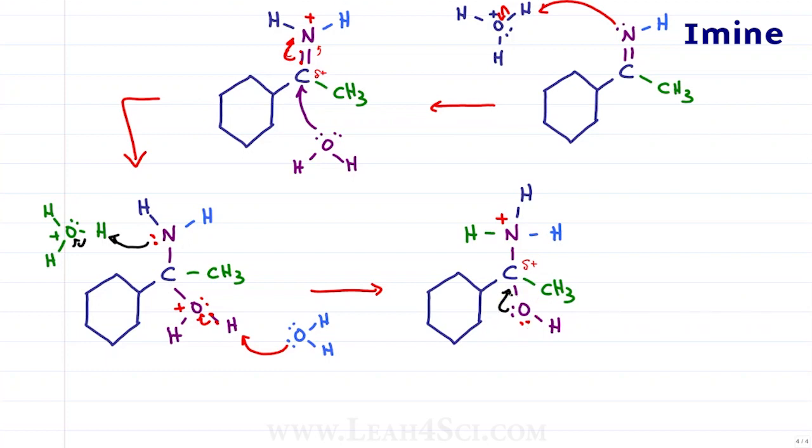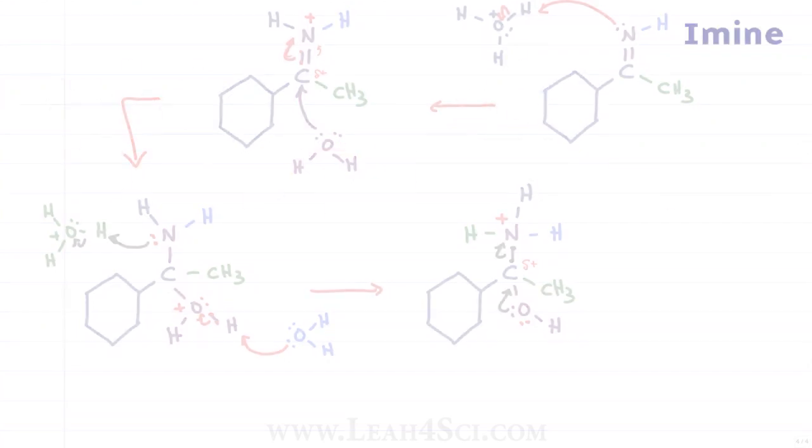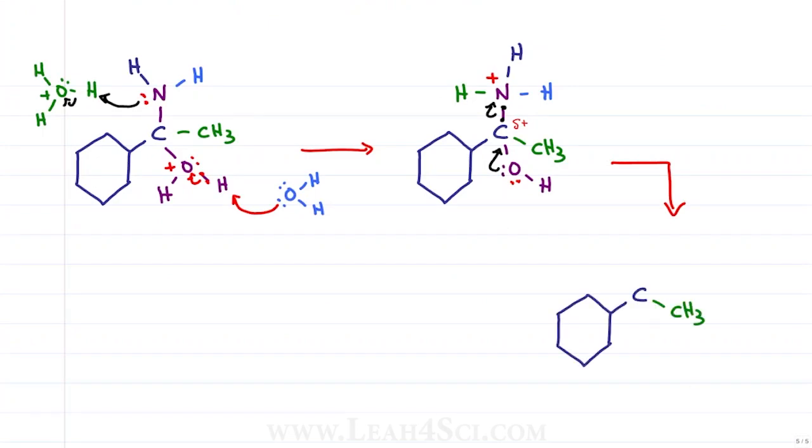Oxygen will use its lone electrons to collapse towards the carbon forming a pi bond forming too many bonds to carbon which will kick out the best leaving group, a nitrogen with three bonds, which gives us a molecule that looks like this.